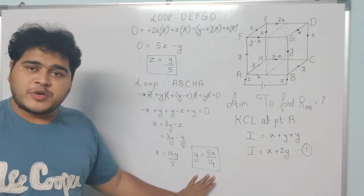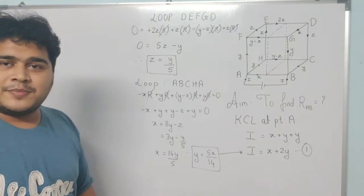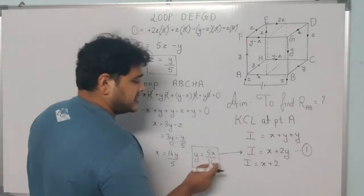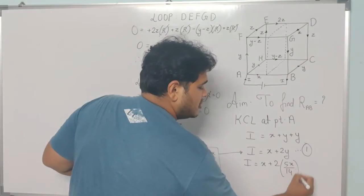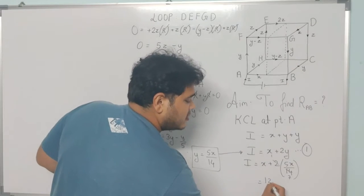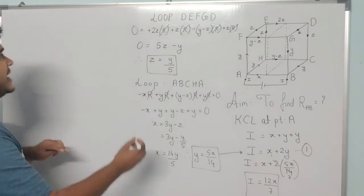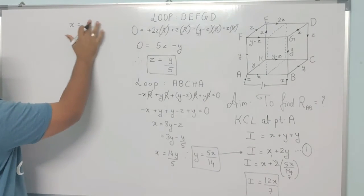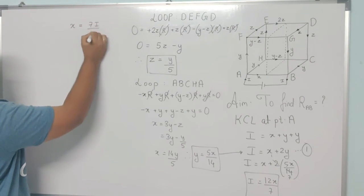Now substituting y = 5x/14 into equation one: I = x + 2(5x/14) = x + 10x/14 = x + 5x/7 = 12x/7. Therefore x = 7I/12.